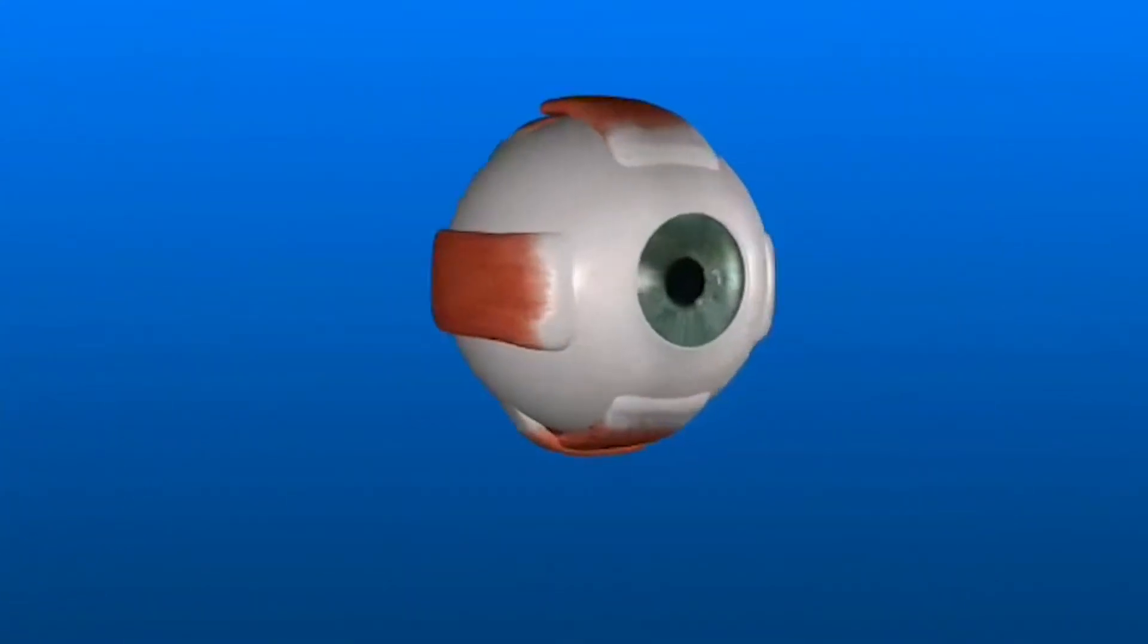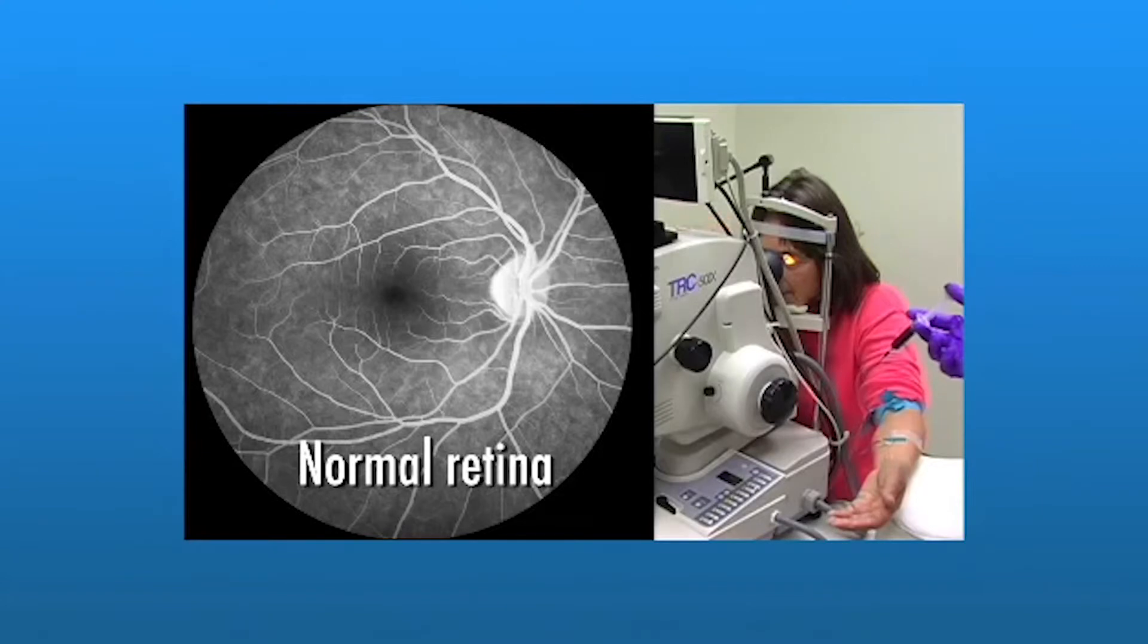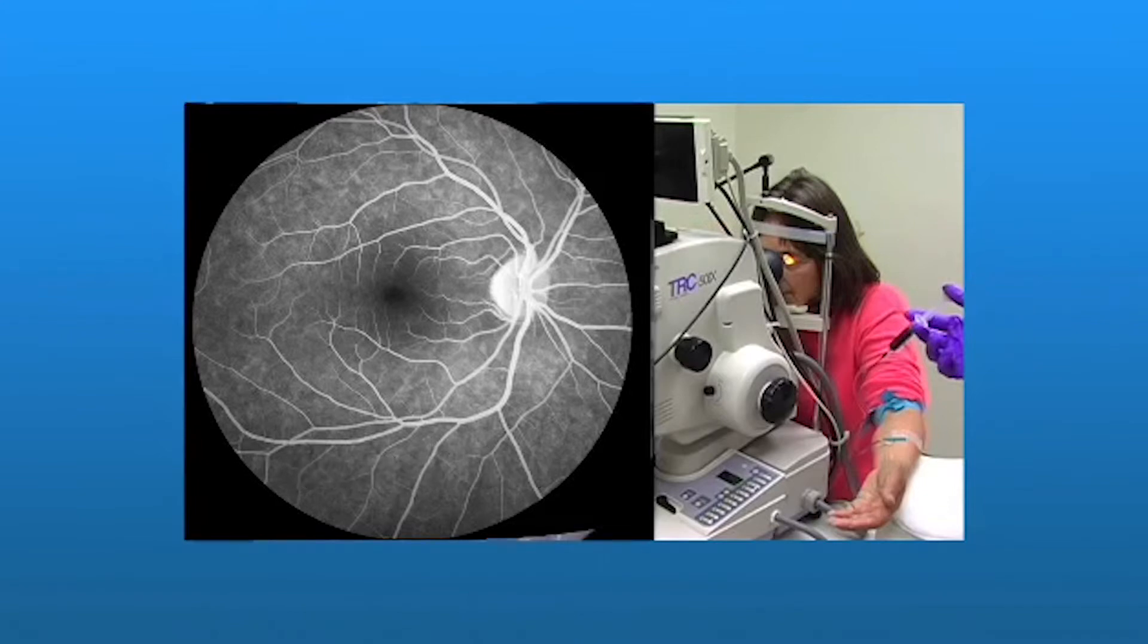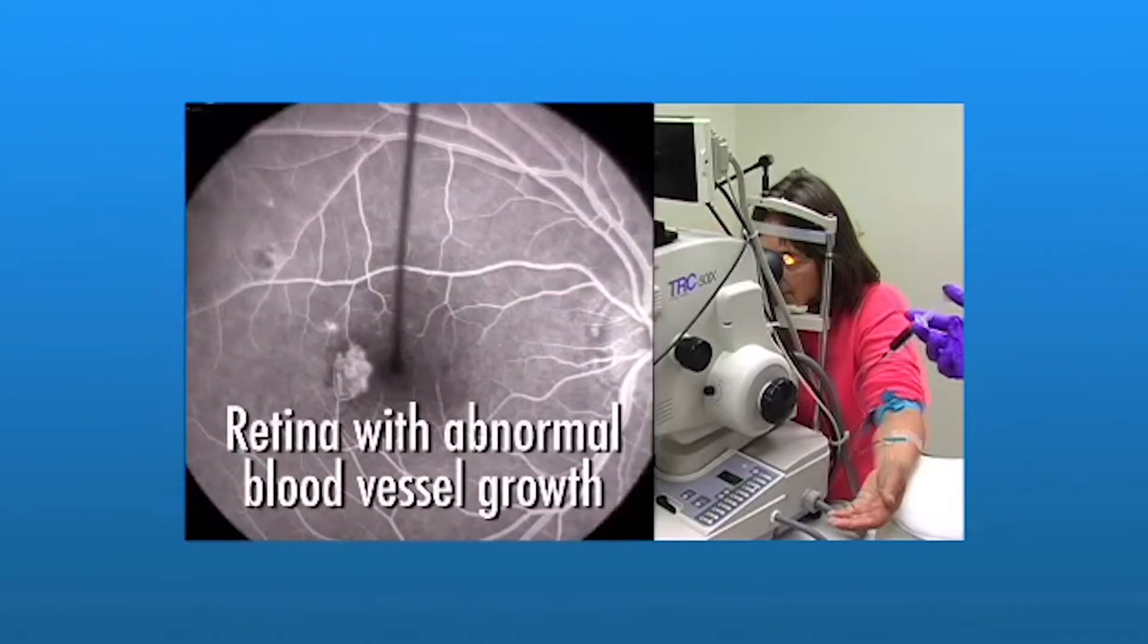The photographs of fluorescein dye traveling through your retinal vessels show which blood vessels are leaking fluid, how much fluid is leaking, how many blood vessels are closed, therefore not bringing oxygen to the retina, and whether or not new blood vessel growth is beginning.